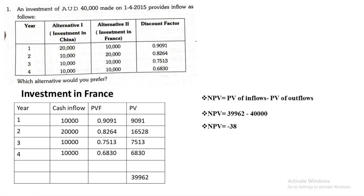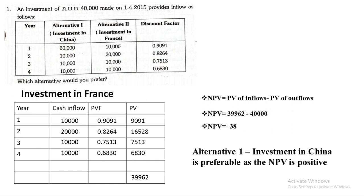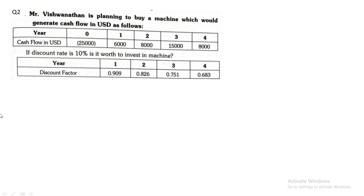The first alternative (China) gives a positive NPV and the second (France) gives a negative NPV. We always choose the alternative with the higher net present value. Since France gives a negative NPV it makes no sense to invest there. Therefore, Alternative 1 — investment in China — is preferable as the NPV is positive. The sum is simple: multiply cash inflow by PV factor, get the total PV, then apply the NPV formula.